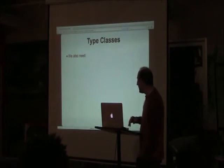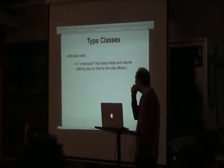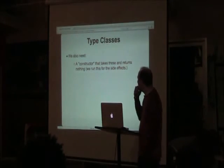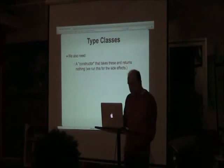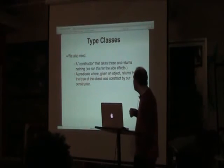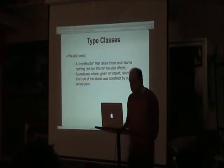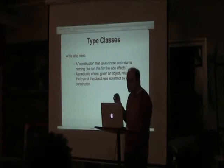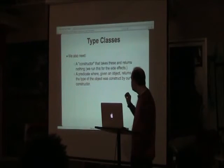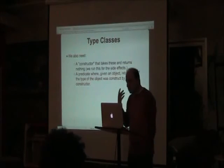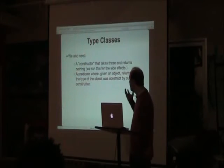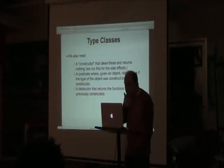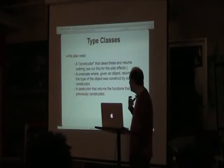To implement type classes we need: a constructor to create instances — but these instances are never actually returned; we call the constructor for its side effect, recording in the background that you've constructed this. We need a predicate: given an object, return true if we constructed the type class for that object's type. And we need a destructor to get the equals function back out of the type class.